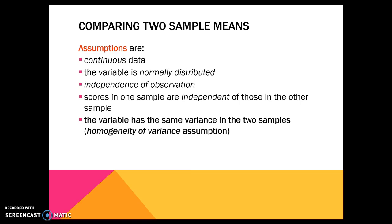We have some assumptions and these are really important. This is continuous data — we are looking at one score that is continuous and then we're breaking it down by groups. The variable should be normally distributed. We are assuming independence of observation, meaning each person's score is their own and you're not working in groups to get your score. We are assuming that one sample is independent of the other — even if it's your score in the pre-post, you don't get to look at your pre-test when you're doing your post-test.